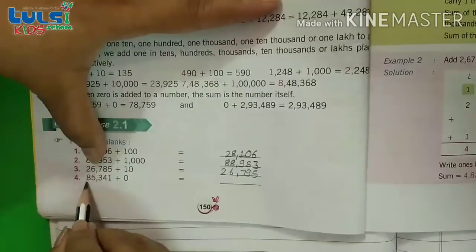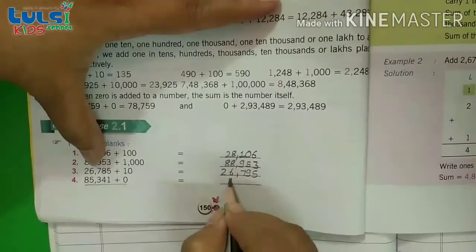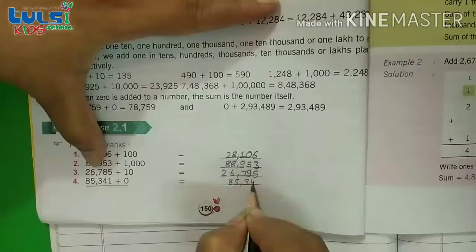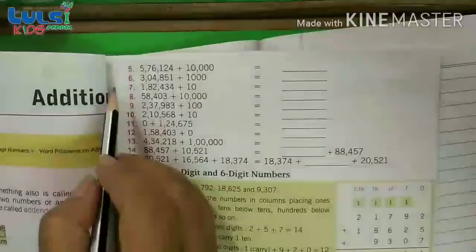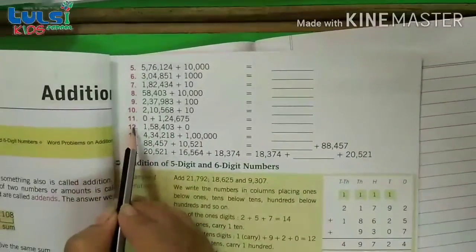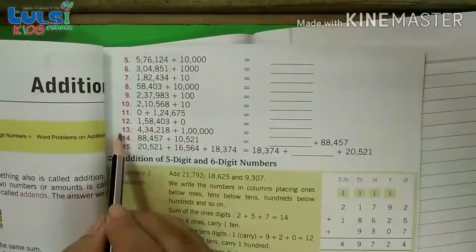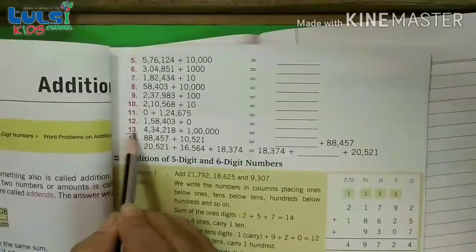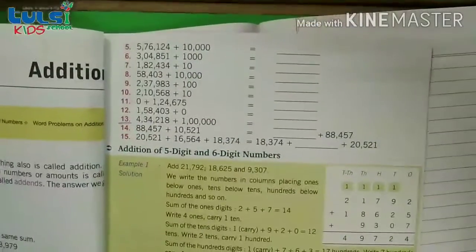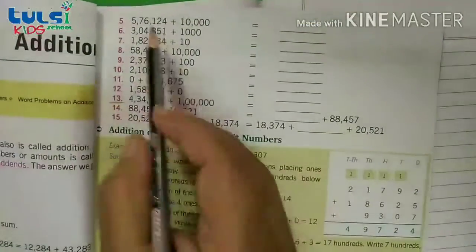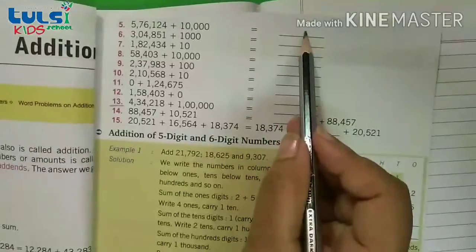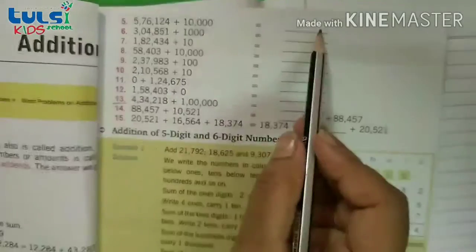Now you know agar kisi bhi digit me 0 add karta hai, toh it is as usual, as it is waapas aa jati hai. Toh abhi aapko ye jo question hai, yehaan tak aap log ko homework mein aapne aap khud karna hai, without solution, okay? Without solution directly ye solve karna ka try karna. Aap log ye directly solve kar sakti hai.